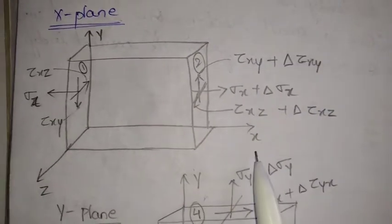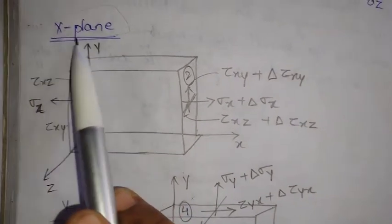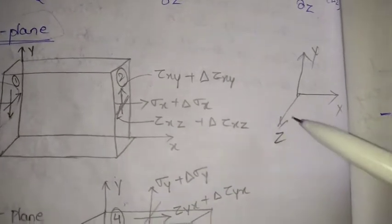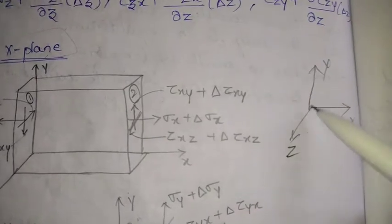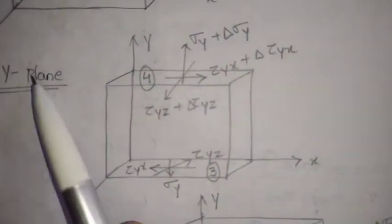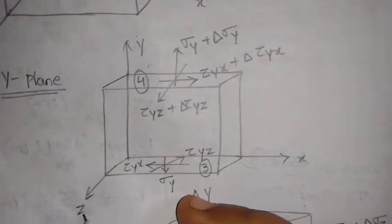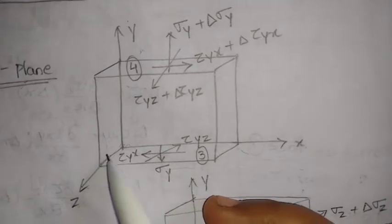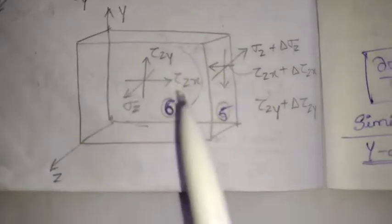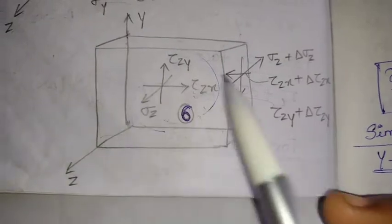Here is a diagram of the rectangular element. When we talk about the x-plane, it lies between the y and z axes. When talking about the y-plane, it lies between the x and z axes. When talking about the z-plane, it lies between x and y. The horizontal axis is x, the vertical is y, and the third is z. Now we understand what these planes are.